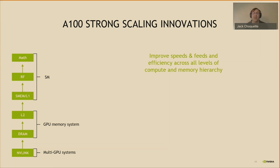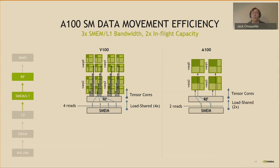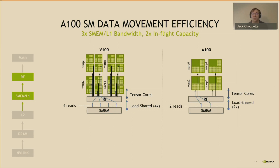We've designed A100 innovations to meet the strong scaling challenge, improving speeds, feeds, and efficiency throughout the architecture, starting in the SM and working down through the memory system. Let's look at how the TensorCores are fed from the register file. Four warps work together on a large matrix multiply. With V100's eight-thread TensorCores, data had to be loaded four times from shared memory into different thread registers. In A100, the 32-thread TensorCores reduce the shared memory load bandwidth by half.